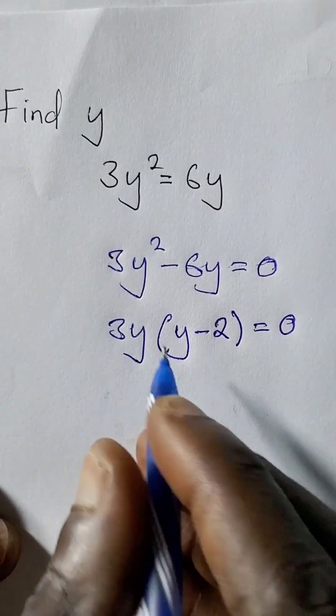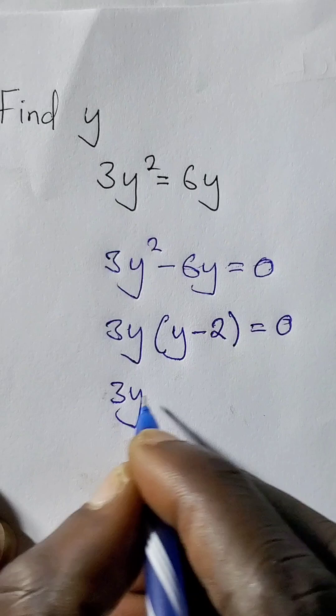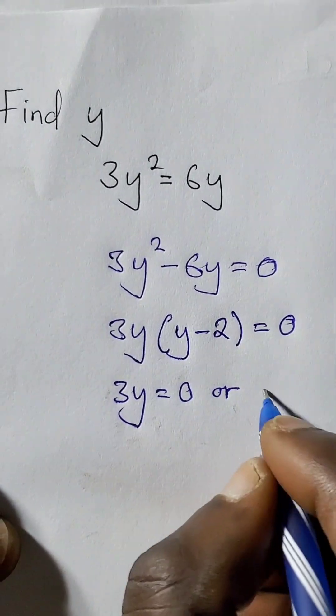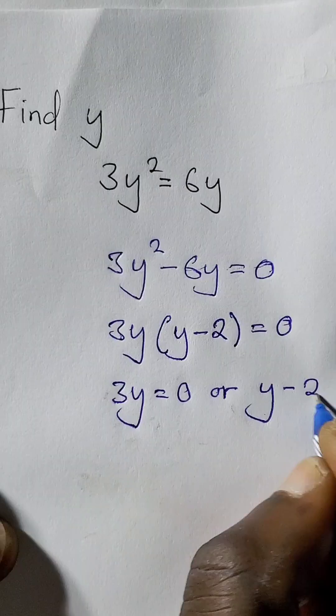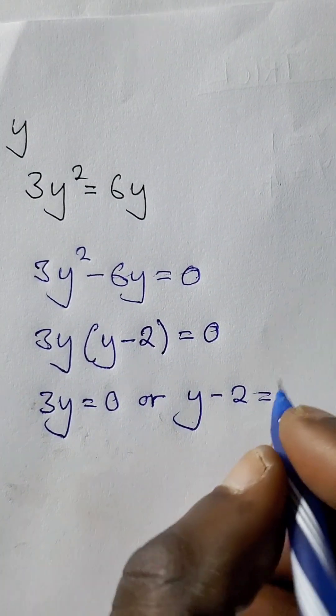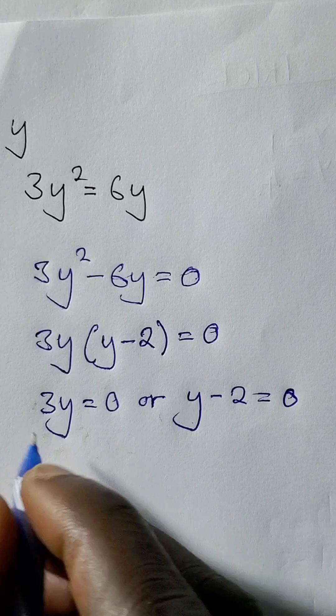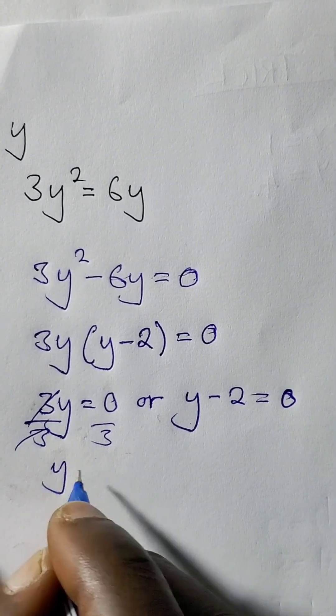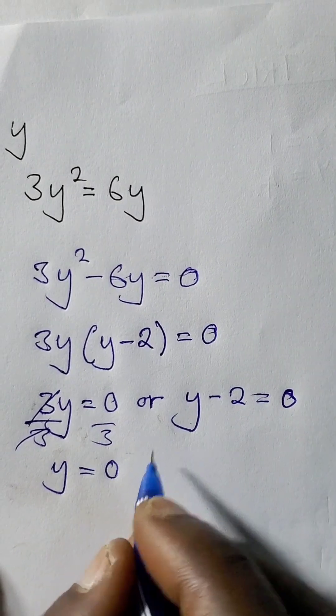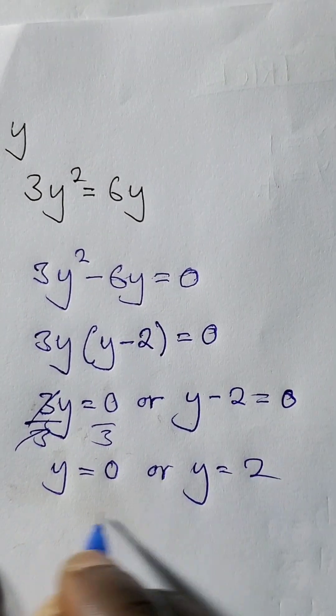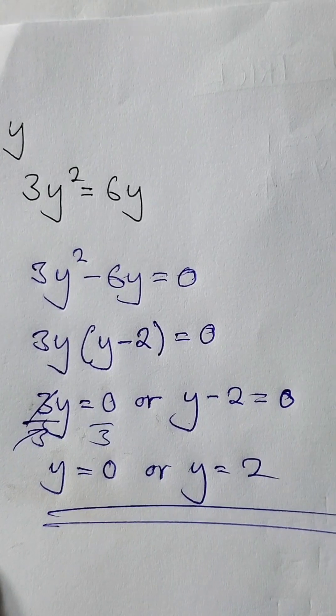And here we're just going to say 3y is equal to 0, or y minus 2 is equal to 0. So for y, here we divide both sides by 3, so y is equal to 0, or y is equal to 2. And this is the answer.